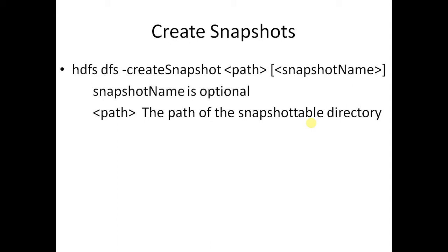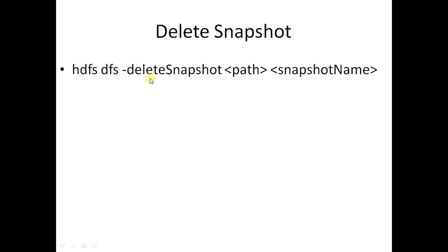Once the snapshot is enabled, any user who is the owner of the path can create a snapshot. Use the 'create snapshot' option with the path. The snapshot name is optional — if you don't provide a name, it uses a default timestamp alphanumeric string. The path is a mandatory field. If you need to delete the snapshot, use the 'delete snapshot' option with the path and snapshot name.